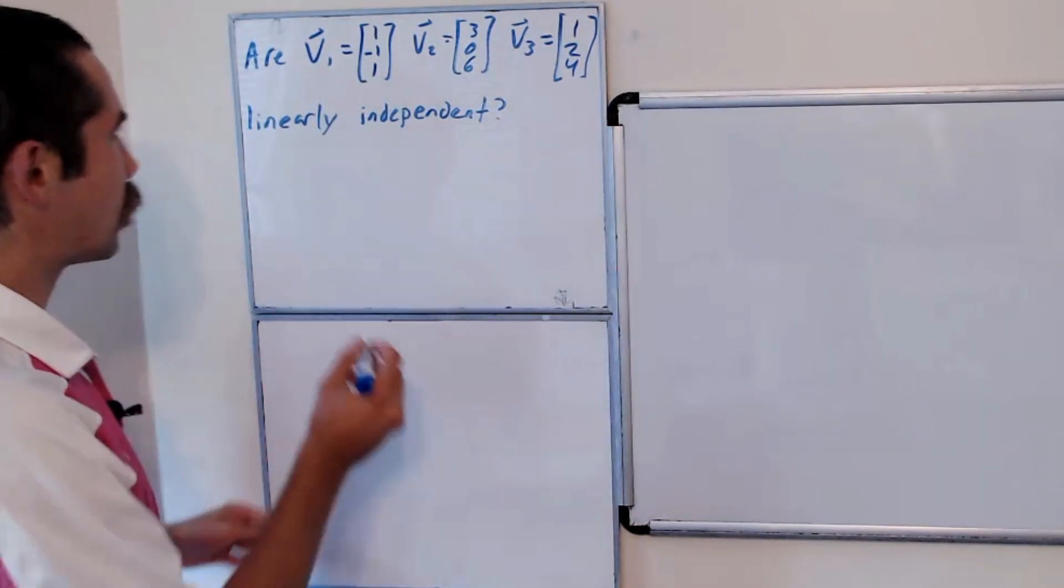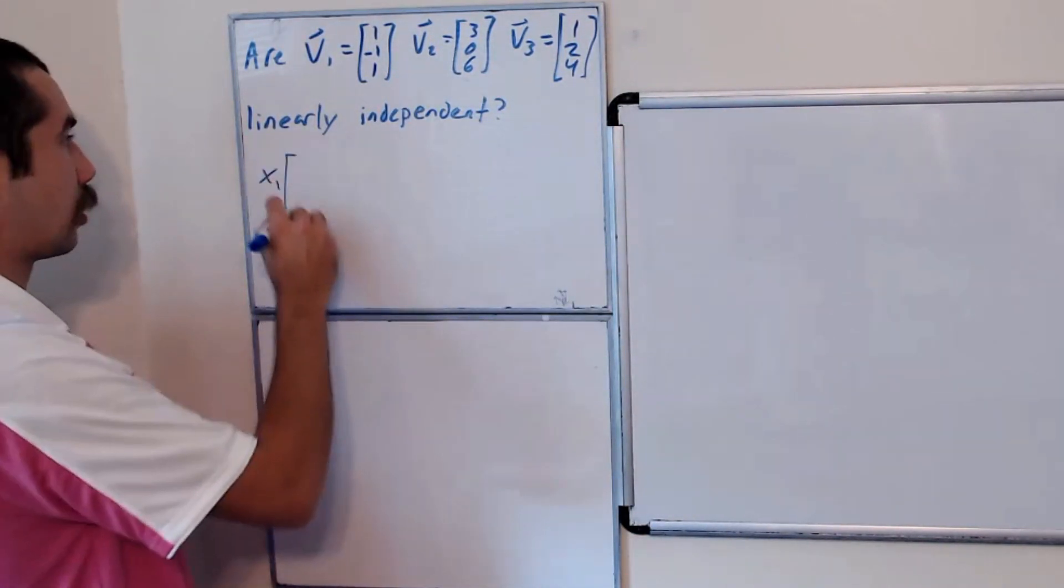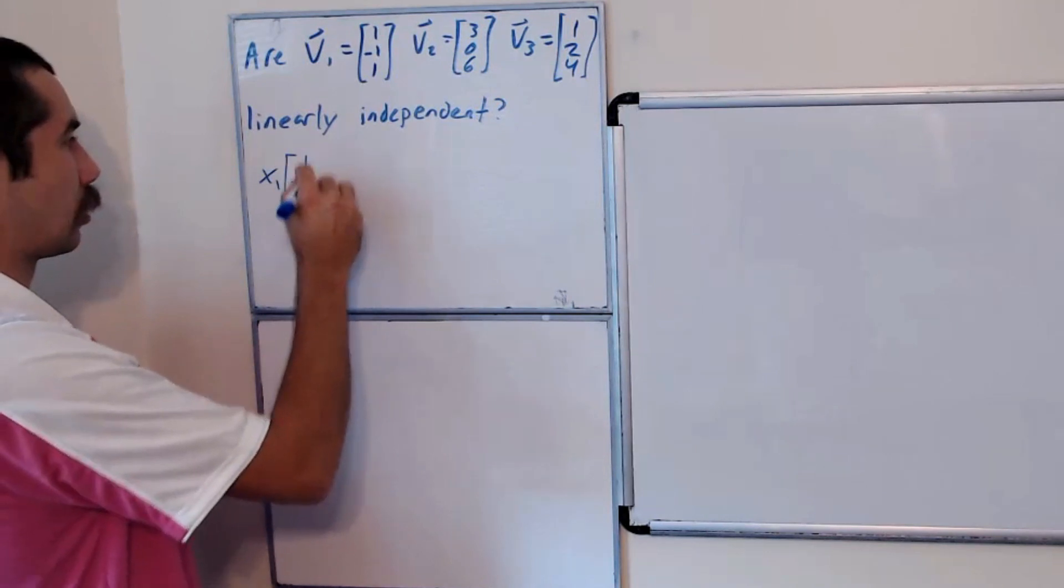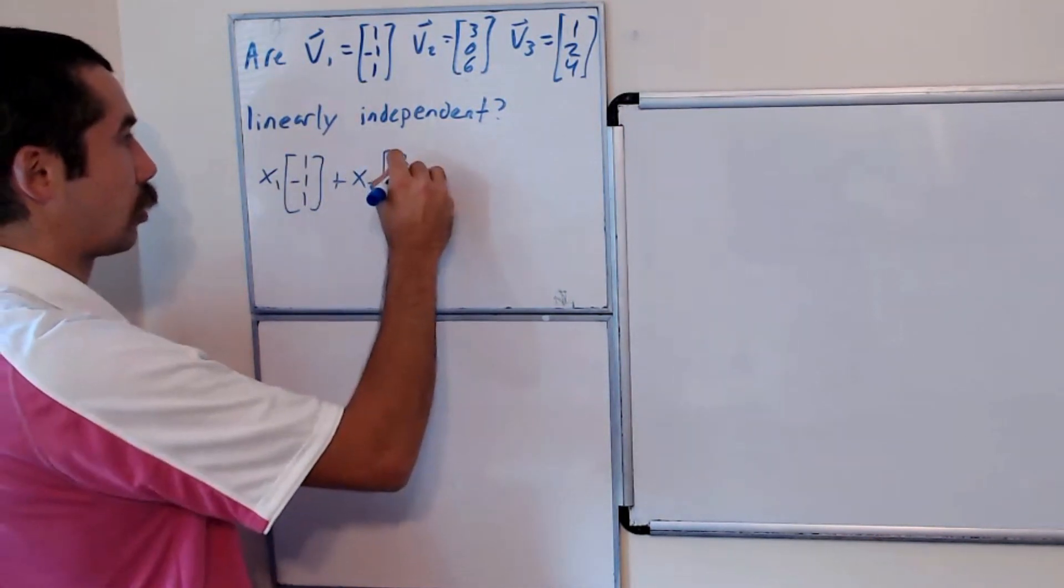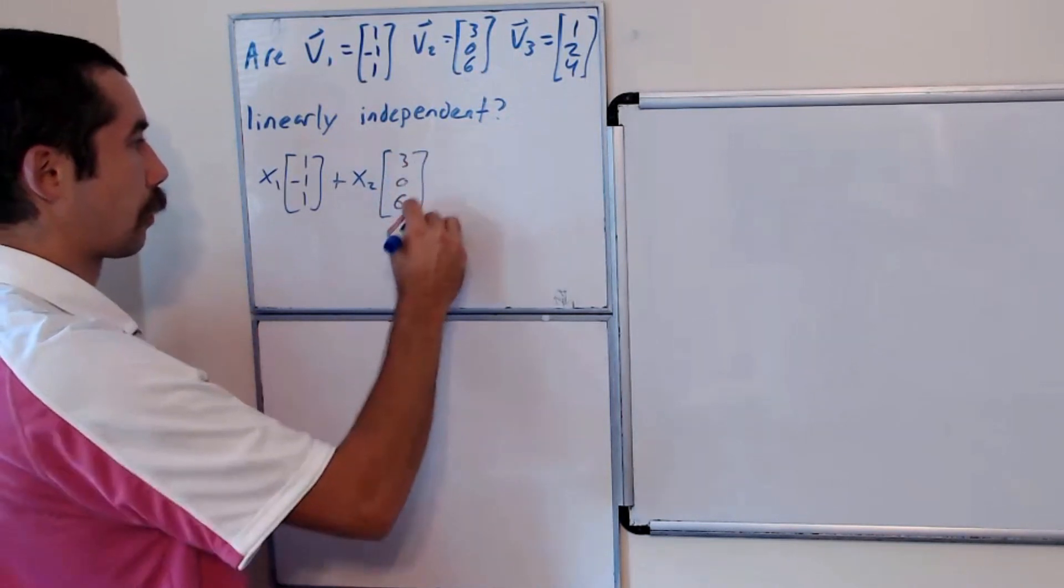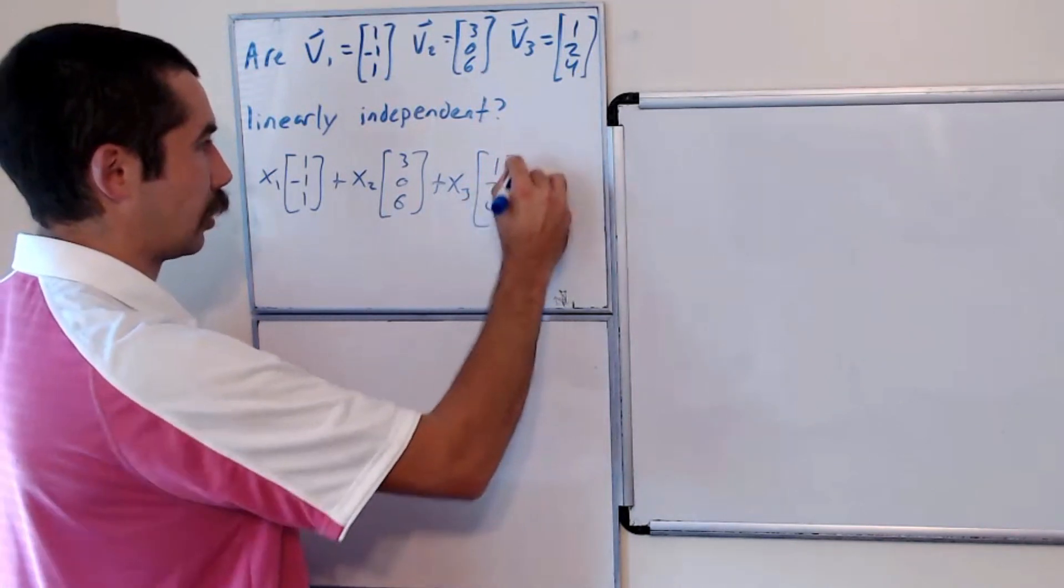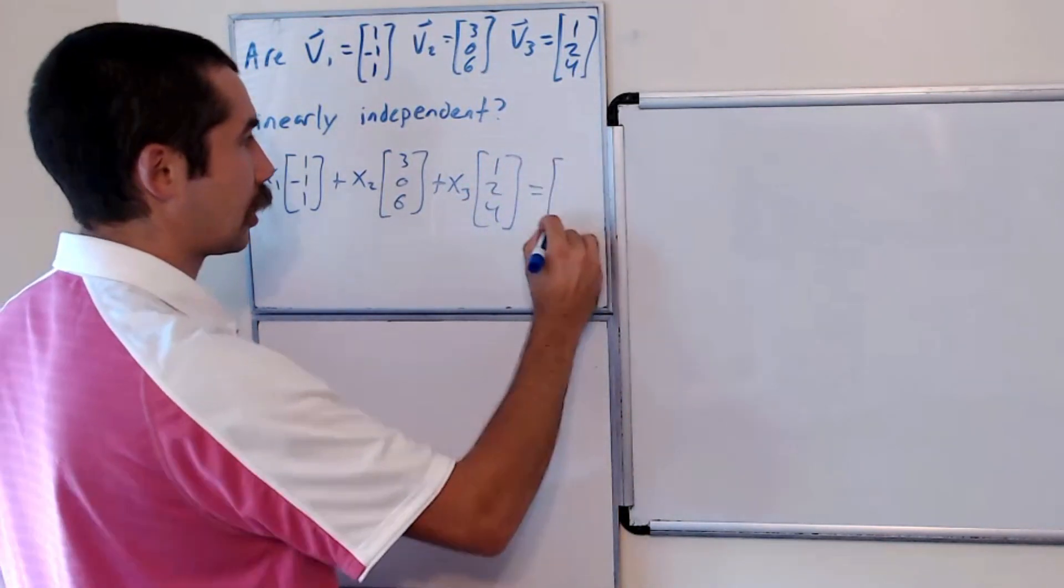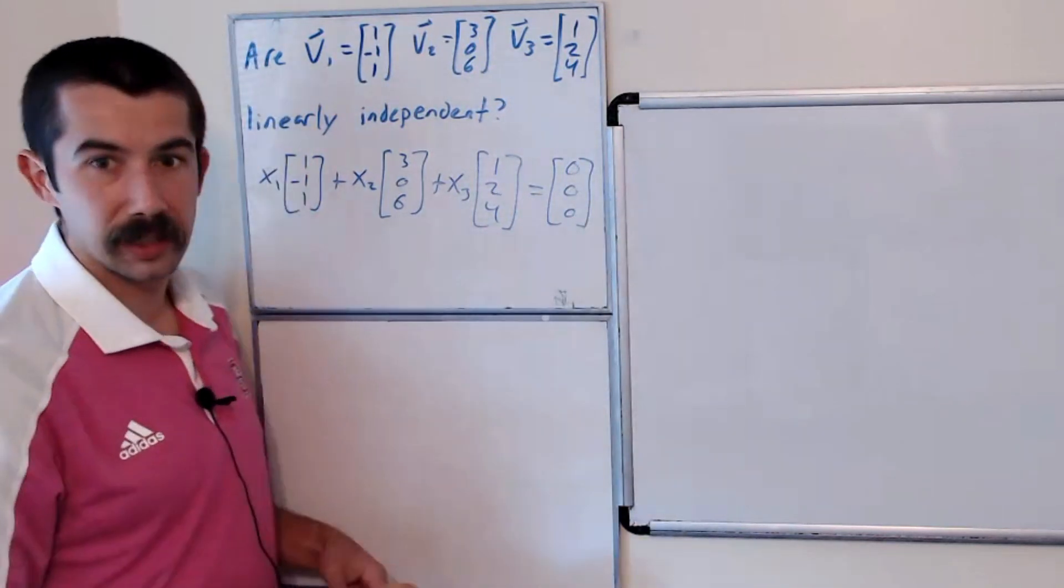It means that there's no non-trivial solution to the equation x1 times v1 plus x2 times v2 plus x3 times v3 equals the zero vector. So to check if our set of vectors